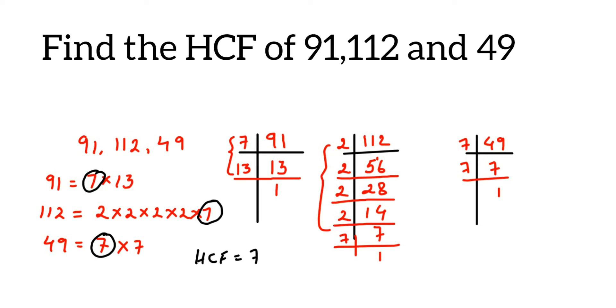Is any other common factor present? No, except 7 there is no other common factor. If there were other common prime factors, you would multiply those as well. Since there are no other common prime factors, 7 is the HCF of 91, 112, and 49.